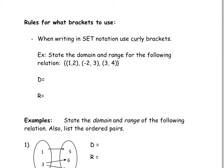When writing in set notation, we use curly brackets if we're representing a bunch of individual points. For example: state the domain and range of the following relation. Notice these are 3 points: (1, 2), (-2, 3), and (3, 4). The domain is all the possible values of X, which are negative 2, 1, and 3. The range is all the possible values of Y, which are 2, 3, and 4. Since this is a set of individual numbers, we use curly brackets.